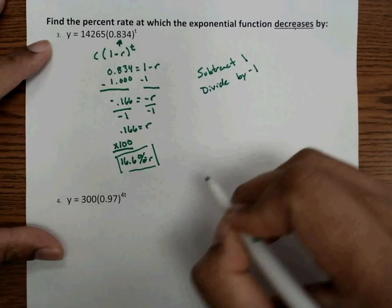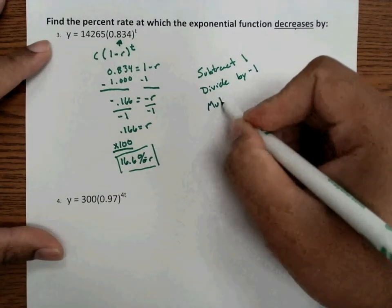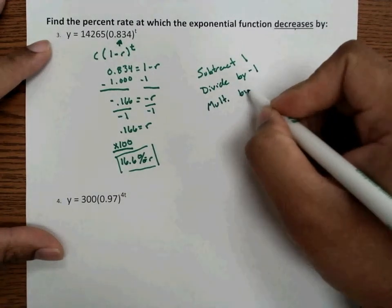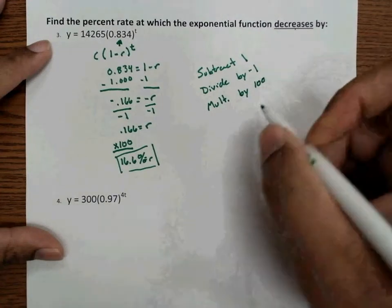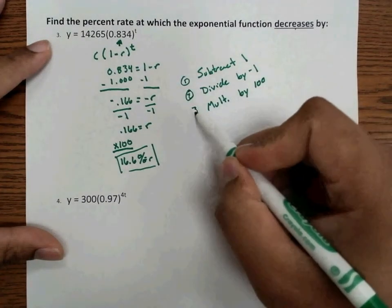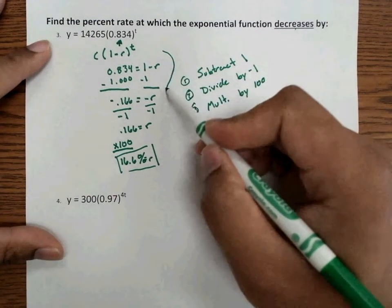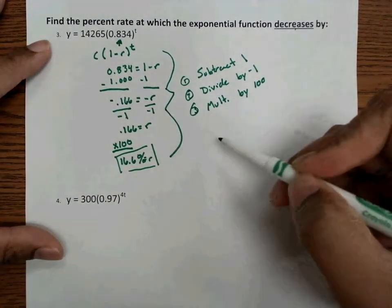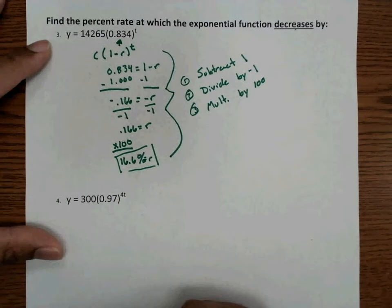And then multiply by your 100. That's why I'd be real leery about taking these shortcuts. You really want to understand what truly is going on behind the scenes before you jump to just taking the shortcut. So let's do one more.